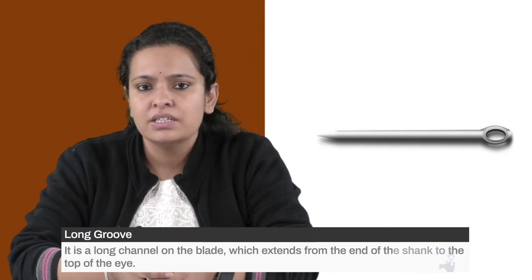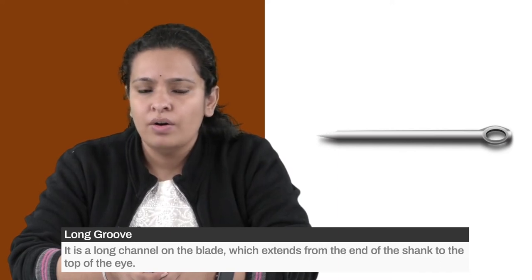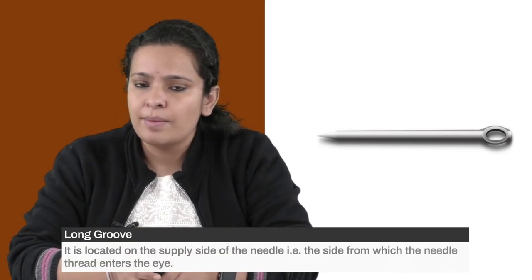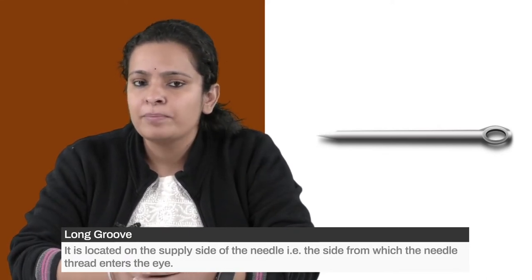The long groove is the longest channel on the blade of a needle, which extends from one end of the shank to the top of the eye. It is located on the supply side of the needle — that is, the side from which the needle thread enters the eye of the needle.